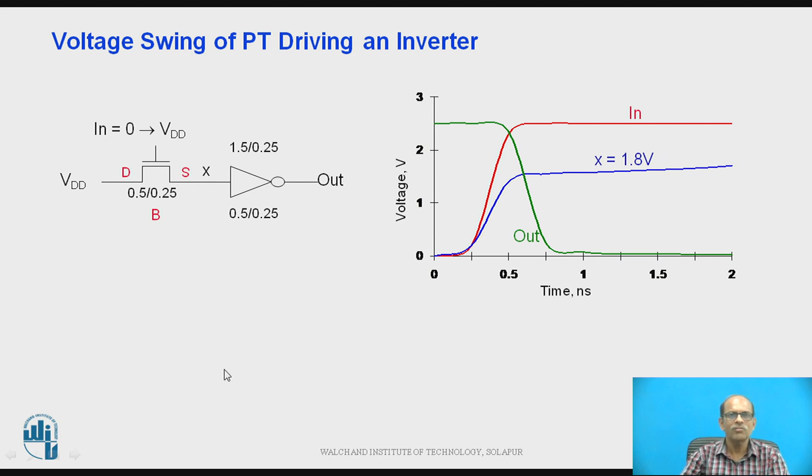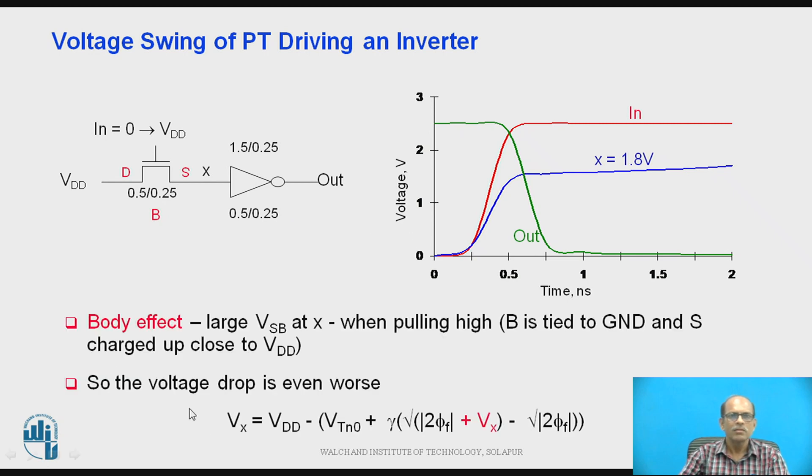So this is the voltage swing. These are the voltage waveforms, so this is the input and this green is the output and X is the output at this node X.